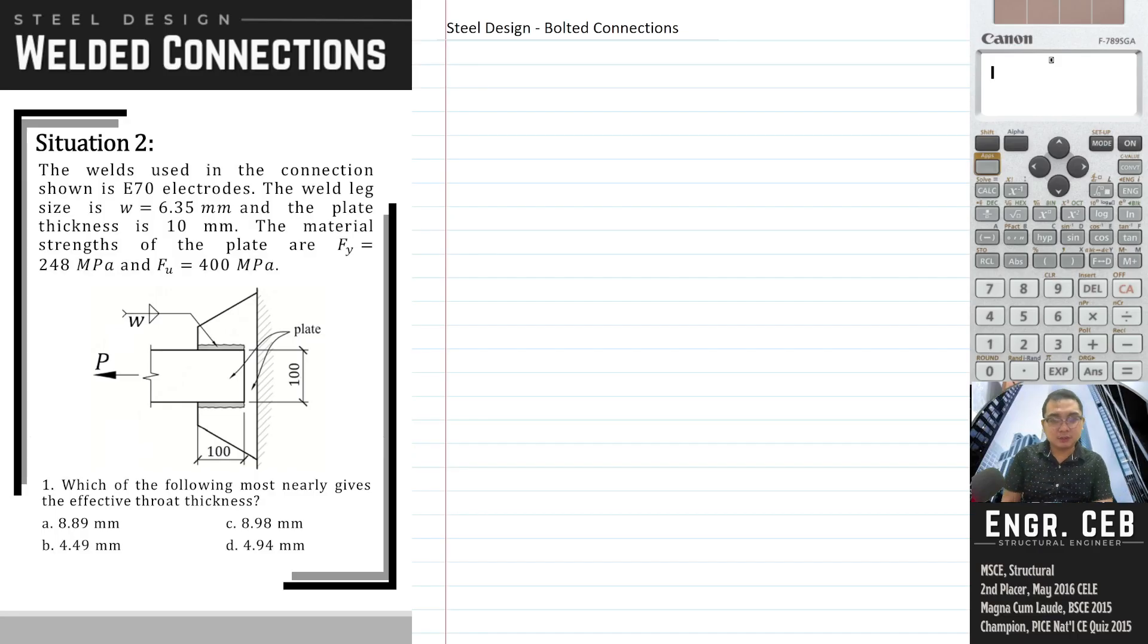The welds used in the connection shown is E70 electrodes. The weld leg size is w equals 6.35 millimeters and the plate thickness is 10 millimeters. The material strengths of the plate are fy equals 248 megapascals and fu equals 400 megapascals.